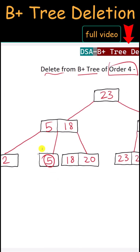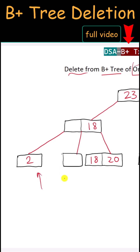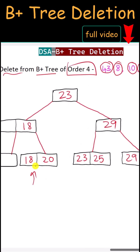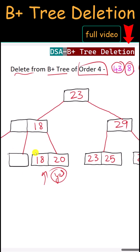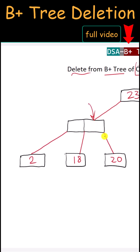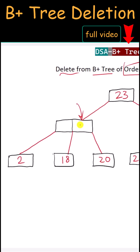Next we delete 5. We delete it from the leaf and also from the internal node. We cannot borrow from the left child because it has the minimum number of keys, but we can borrow from the right child. We borrow 18 through the parent node, leaving only a single value in that node. The internal node gets the minimum value from the right child, which is 20, and that node gets the minimum value from the right child, which is 18.